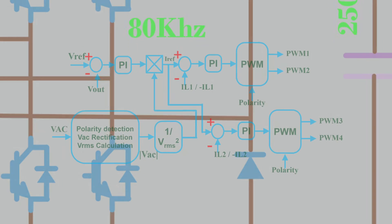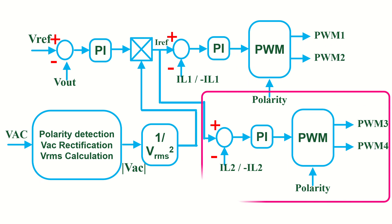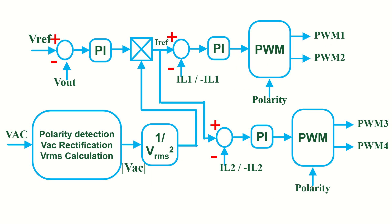This is the controller block diagram of an interleaved totem pole PFC converter. Compared to the normal totem pole PFC converter, we have an additional current control loop for the second inductor current. Everything else in the controller remains the same.